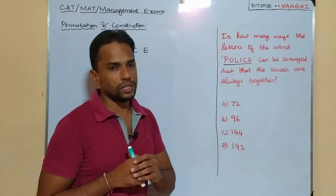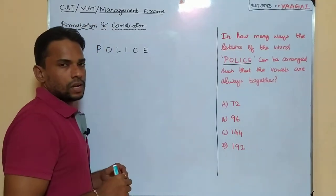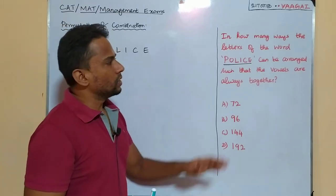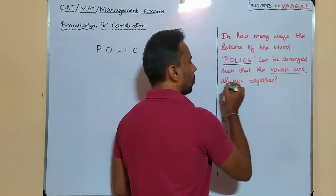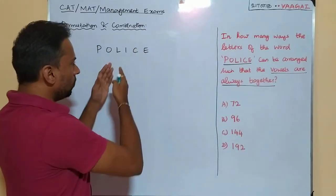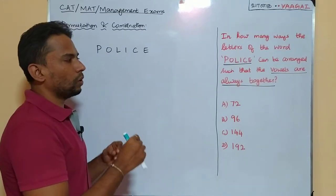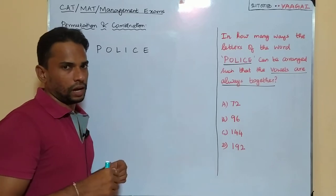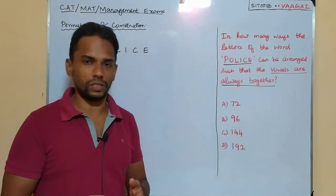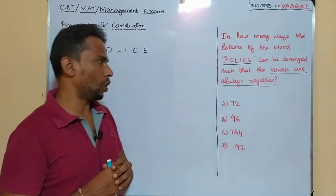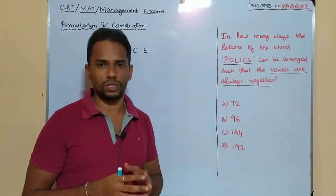The condition is very important: we need to rearrange these letters in such a way that the vowels are always together. So we have to work out in how many possible ways this can be done. This is going to be a very basic question.